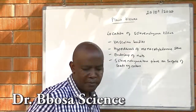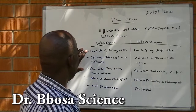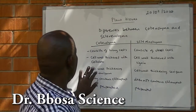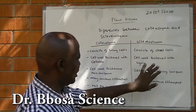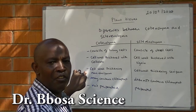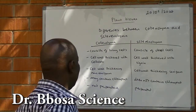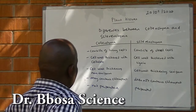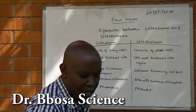Example: cotton. Differences between colenchyma and sclerenchyma. Colenchyma consists of living cells; sclerenchyma consists of dead cells. Cell walls are thickened with cellulose in colenchyma; in sclerenchyma, cell walls are thickened by lignin. In colenchyma, cellulose thickening is non-uniform — it is thick at the corners. In sclerenchyma, cell wall thickening is uniform. Colenchyma may contain chloroplasts; sclerenchyma does not contain chloroplasts. Colenchyma cells are not perforated; sclerenchyma cells are perforated.